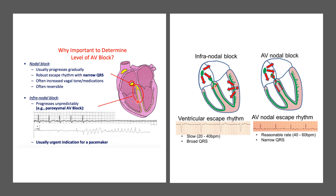In case of AV nodal block, the remaining nodal tissue is active and it will become the pacemaker, beating at a rate of around 45 beats per minute. So the idioventricular rhythm will be at around 45 beats per minute, and it usually ranges from 40 to 60 beats per minute in case of AV nodal block.